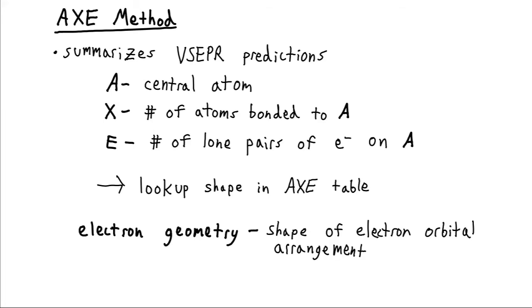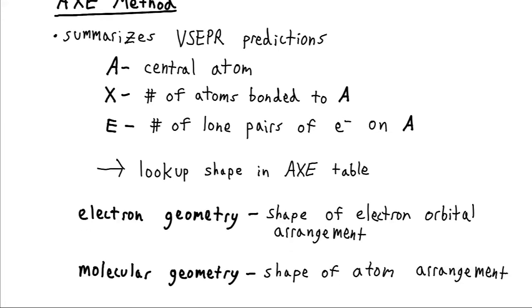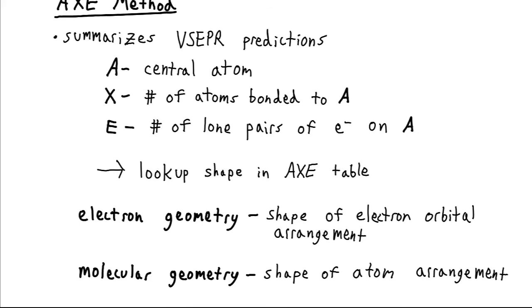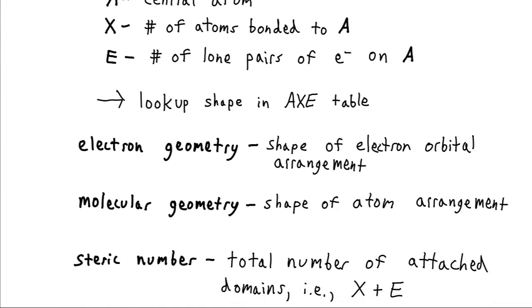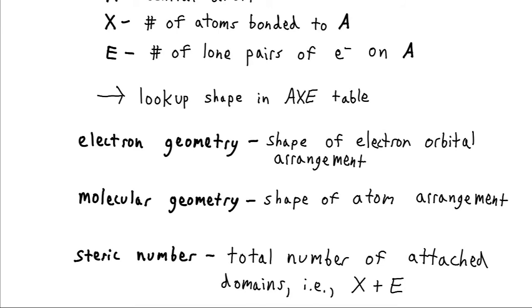And one of the things we're going to look up is going to be the electron geometry. So that's where we've been considering, where we look at the pairs of electrons. We might also be interested in the molecular geometry. And this is where we're just looking at the shape of how the atoms are arranged. Even though the electrons are what dictate the overall shape, for the molecular geometry, we're going to ignore their existence once the shape is determined, and just look at how the atoms themselves are arranged. And we're going to define what's called a steric number. This is the total number of the attached domains. So it's the number of lone pairs of electrons that we have to worry about, plus the number of bonds that we have to worry about. And we consider double bonds or triple bonds to just count as one.